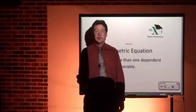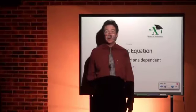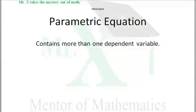Hi, Mr. X with Glossary Term: Parametric Equation — an equation with more than one dependent variable. We use these all the time in analytic geometry. Nothing really special about it per se; it's a very general type of thing.